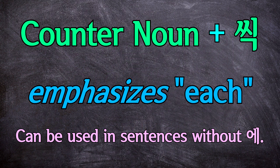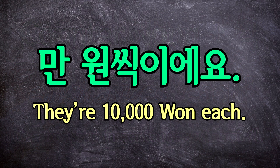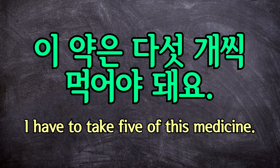One more thing you can do is attach 씩 even without using the particle 에. When you do this, it still adds that meaning of 'each' or 'every,' although without specifying how often or what it's for. For a quick example: 만원씩이에요. They're 10,000 won each. You can also do this after an amount of time — attaching 씩 after an amount of time adds the feeling that something is happening multiple times over some period of time. For example: 이 약은 다섯 개씩 먹어야 돼요. I have to take five of this medicine — here we can assume they're taking five every time, multiple times over some period of time.